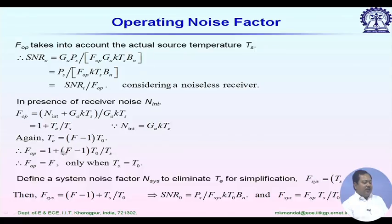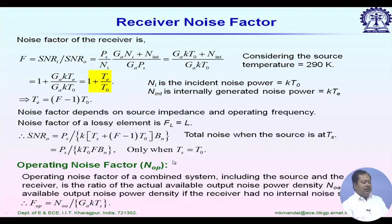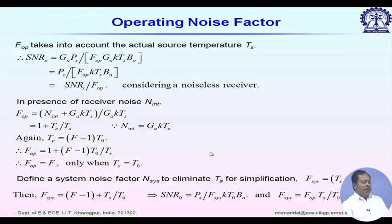F_op simplifies to F only when T_s equals T_0. Similarly, SNR at the output simplifies to k T_0 F B_n only when T_s equals T_0. Otherwise, F_op differs from the specified noise factor F.